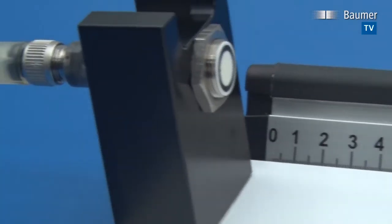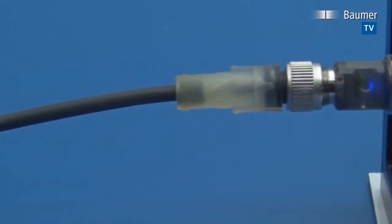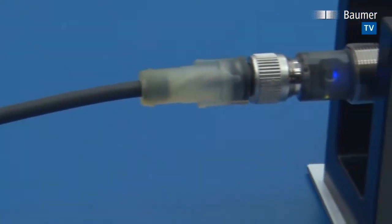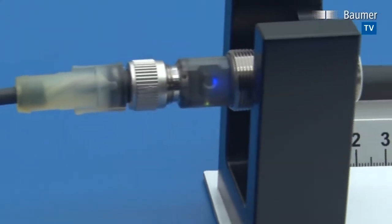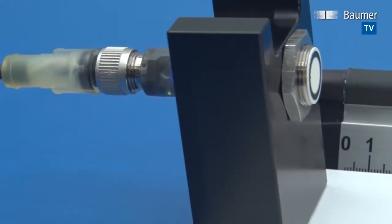This sensor has three levels to teach. Level one is a one-point teach, and the position of reflector might change by plus-minus five percent. Level two is also a one-point teach, and the position of reflector might change by plus-minus ten percent. Level three is a factory reset.